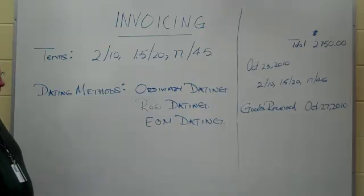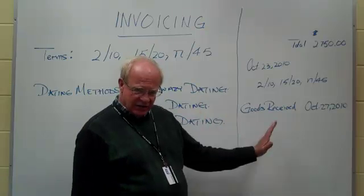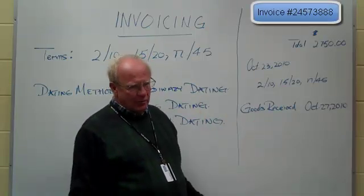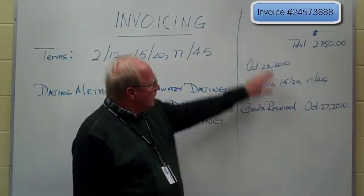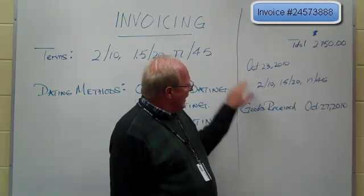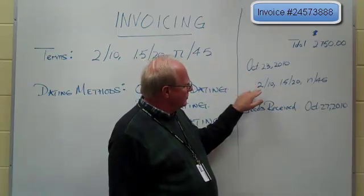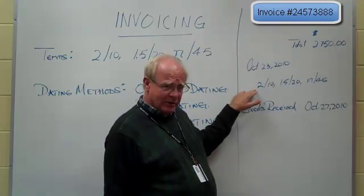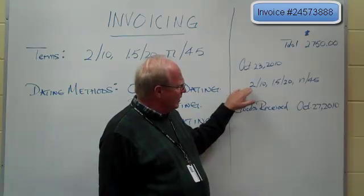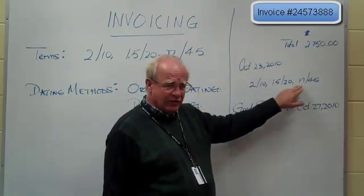Each invoice will have an amount of money on it. Think of this part to the right of this line as an invoice — there are a couple of samples of invoices, and I will go through them with you. This invoice is for $2,750. It was written on October the 23rd. The terms are 2/10, 1.5/20, N/45.